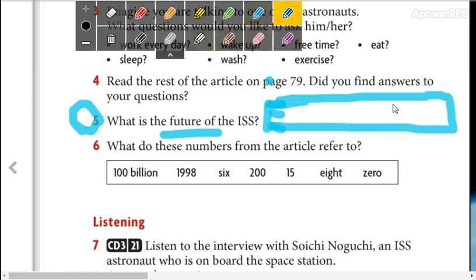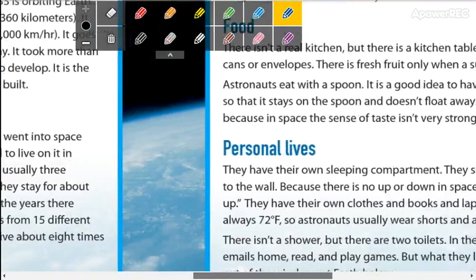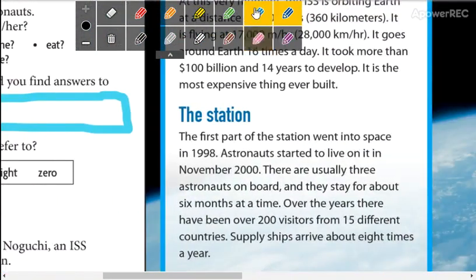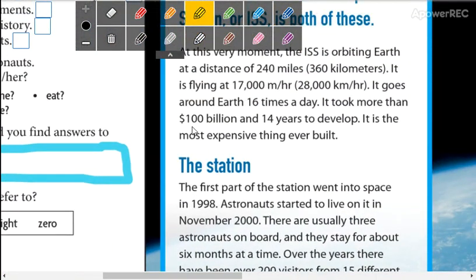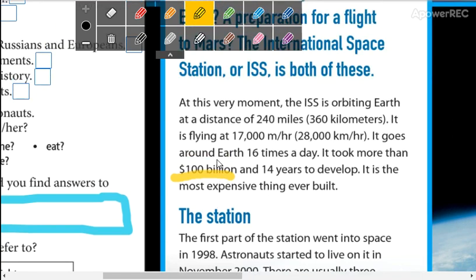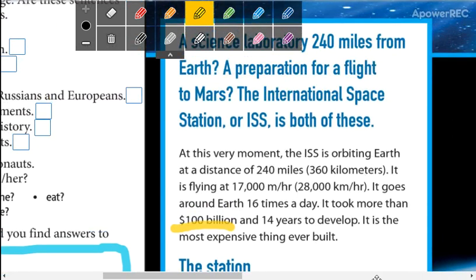Okay, when you finish this, we're going to do part number six. In part number six, you're going to say what these numbers refer to. For example, this number: 100 billion. All these numbers are in this text. 100 billion is here—this is the quantity of money. It took more than 100 billion to develop the ISS, the International Space Station.